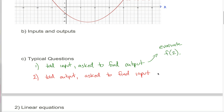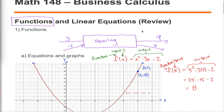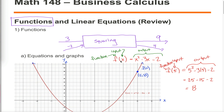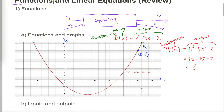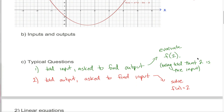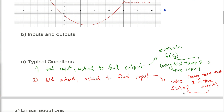Compare that with a question that says: solve f of x equals 2. The mathematical symbols look fairly similar, but they're asking you to do two completely different things. Remember: the thing in parentheses next to the function name is the input, and the thing on the other side of the equals sign is the output. So when asked to evaluate f of 2, you're being told that 2 is the input. But when asked to solve f of x equals 2, the 2 is on the other side of the equals sign, so 2 is the output. One question implies finding the output; the other implies finding the input.